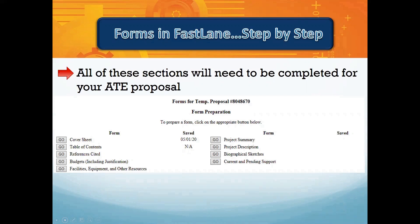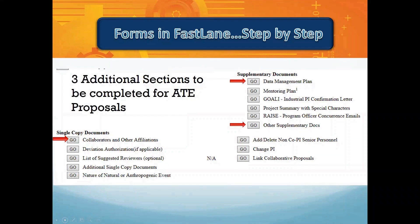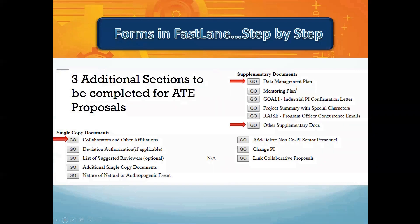Please note there are two supplementary docs that apply to first-time proposers — see the arrows — and there is also one single copy document requirement. There are a few items that you will not need to worry about when completing forms. Go buttons for items such as the mentoring plan, the deviation authorization, and suggested reviewers are not applicable to ATE proposals. Notice that you can view the latest updated saved information signified by date. NSF has implemented a new automated compliance check function. This will help ensure that proposal requirements are met prior to submission. Your proposal will not be accepted if required forms are not completed as specified.